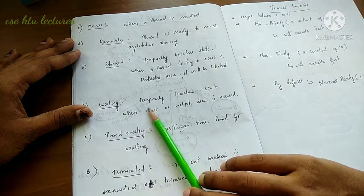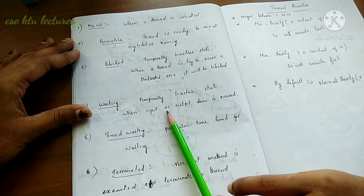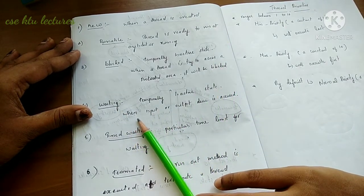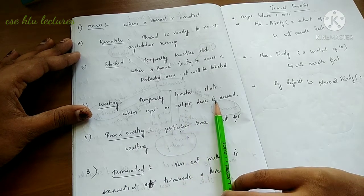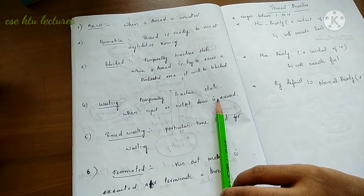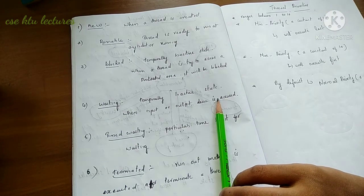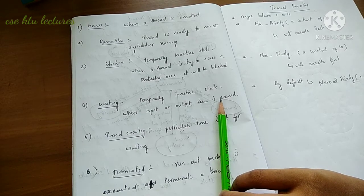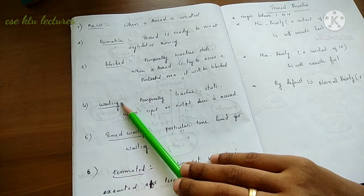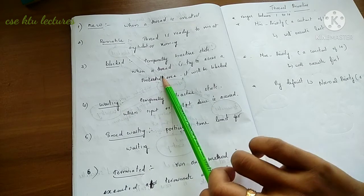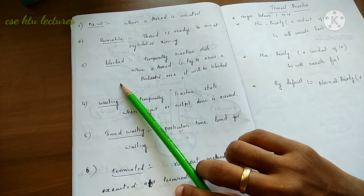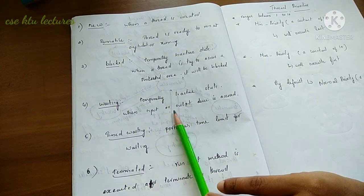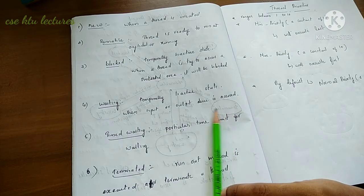The Waiting state is also a temporarily inactive state, but there is a difference. The Waiting state occurs when a thread is accessing an input/output device. Input/output device access places the thread in the Waiting state — that is not the Blocked situation. You have to wait, perhaps because the I/O device is being used by another thread. Protected area access causes Blocked state; I/O device access causes Waiting state.